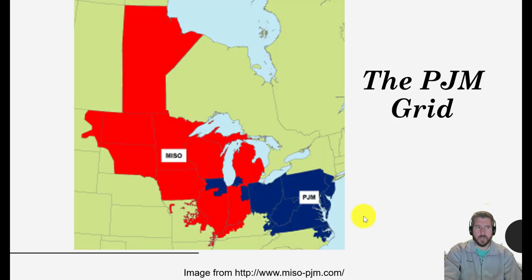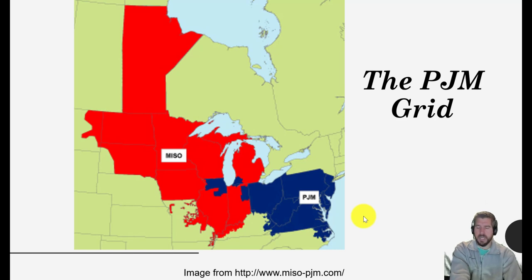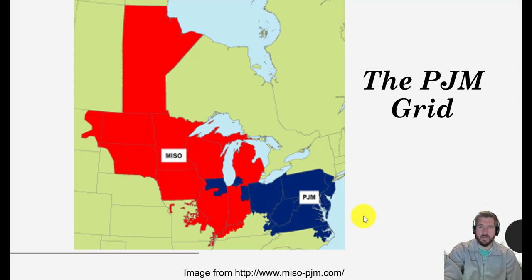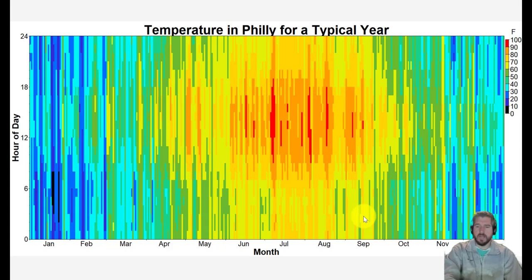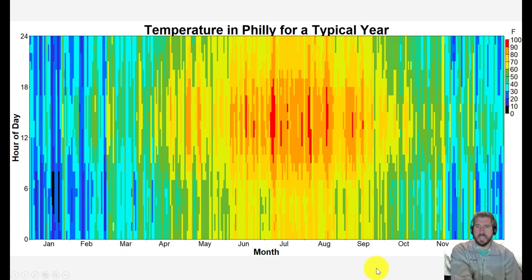We're going to look at data for the PJM grid to illustrate this problem. PJM is an interconnection — anywhere in this map shown in blue is part of the same big regional grid. We do interact with other grids like the New York ISO and the New England ISO, as well as MISO shown in red. We're going to look at data using heat maps. This is a heat map of temperature for Philadelphia for the year — 24 data points going up and down for hours of the day, and 365 lines for days of the year, giving us 8,760 data points.